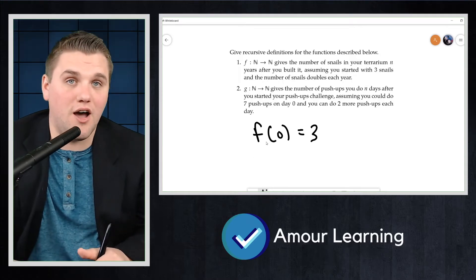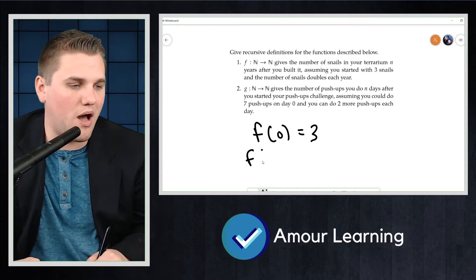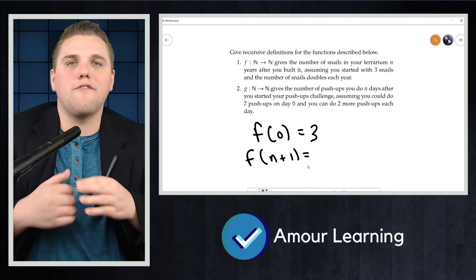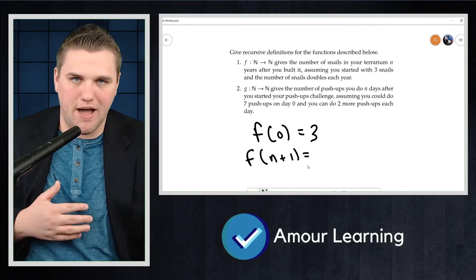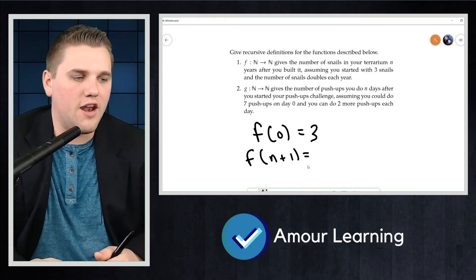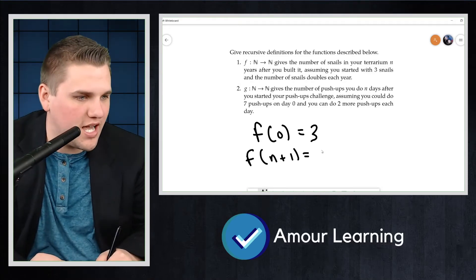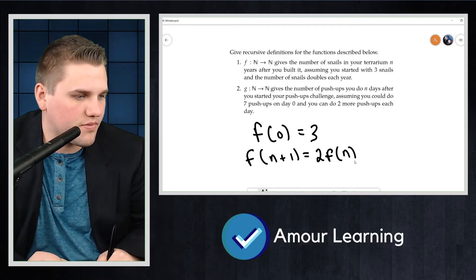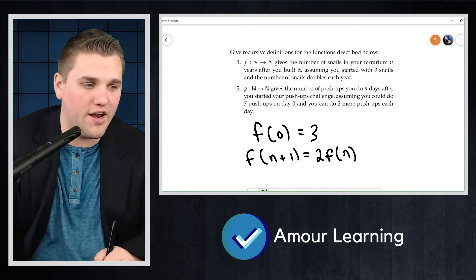That's the first part of our recursive definition. Let's talk about f(n+1). So if I want the next element of my function, the next input, then I have to take my previous input and I double it. So it'd be 2 times f(n).